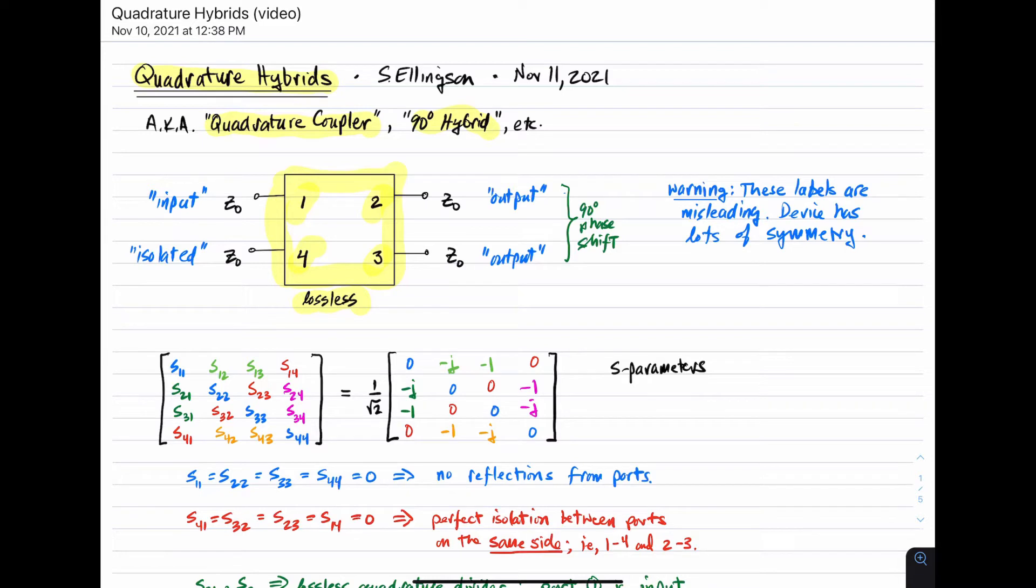The idea, which is normally depicted for a quadrature hybrid, is that port one is the input, ports two and three are often shown as the output, and the two outputs are 90 degrees phase shifted. In other words, one is 90 degrees out of phase with the other one, which is the reason why we refer to it as a quadrature hybrid. The fourth port here in the application, which is implied by this labeling, is said to be isolated.